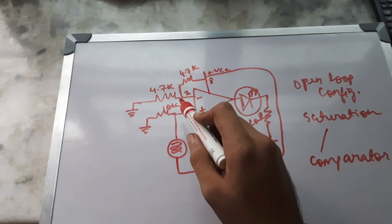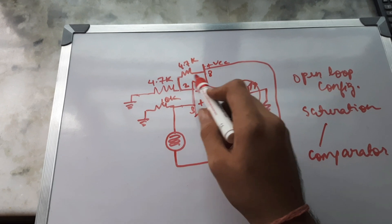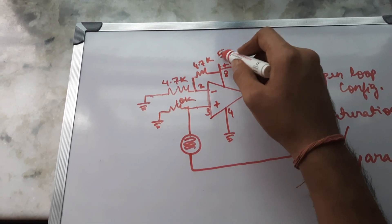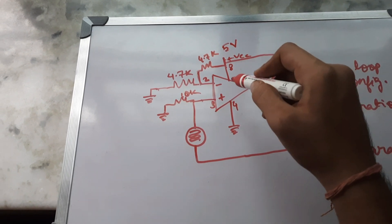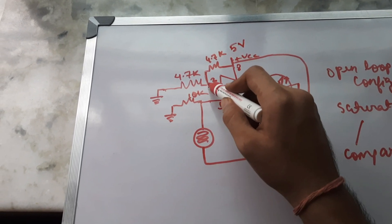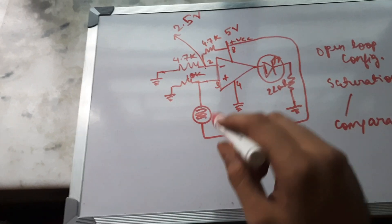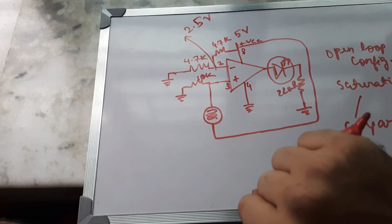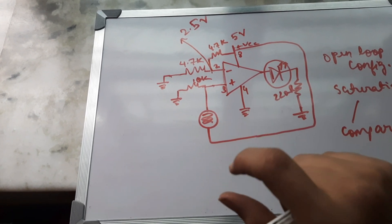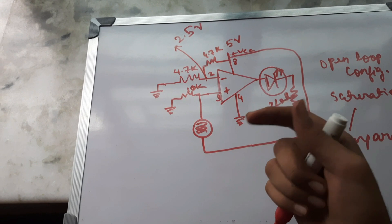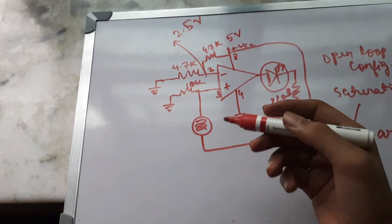First we have created a voltage divider here which will be providing some voltage here. So let's suppose if I give a 5 volt supply to this op-amp, then we'll be having 2.5 volts at this terminal. The LDR will work and it will provide some voltage depending upon how much light is falling on it. If there is no light falling on it, it will not provide any voltage to this terminal.